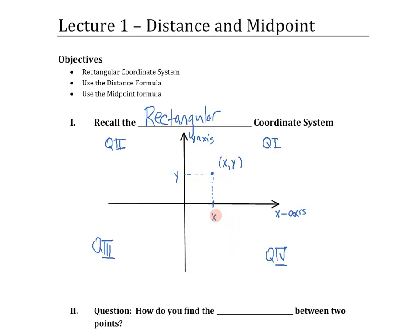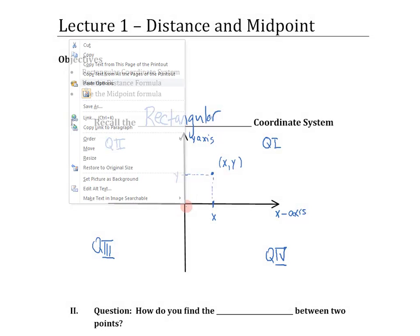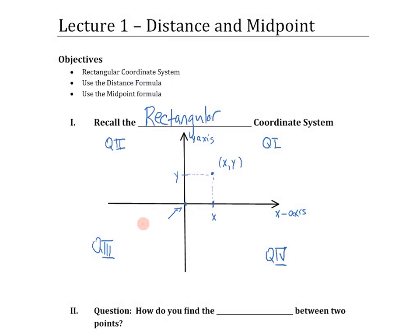Going around counterclockwise is a common practice when we start talking about angles as well. We start up here where everything is positive — this is the positive x-axis going right, and up is the positive y direction. So everything is positive in quadrant one. Over in quadrant two, you have a negative x value and a positive y value. In quadrant three, both x and y are negative. In quadrant four, x is positive and y is negative. The point right in the middle is commonly referred to as the origin, with coordinates (0, 0).